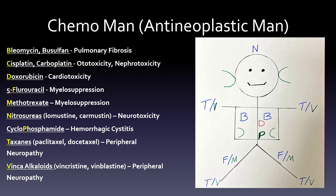Now I'm going to put them all together. It gets a little bit busy in the picture, but you can see that you're going down the alphabet. B for bleomycin and busulfan — pulmonary fibrosis. C for cisplatin and carboplatin — ototoxicity with the ears, nephrotoxicity with the kidneys. Doxorubicin is cardiotoxicity, right in the middle where the heart is, in red. 5-fluorouracil is myelosuppression, put around the knees and legs, as well as methotrexate. Nitrosureas — neurotoxicity on top of the head, lomustine and carmustine. Cyclophosphamide is the P in the middle — hemorrhagic cystitis, put right where someone would pee. Taxanes — paclitaxel and docetaxel — peripheral neuropathy. The T, and same with the vinca alkaloids, the V — peripheral neuropathy.